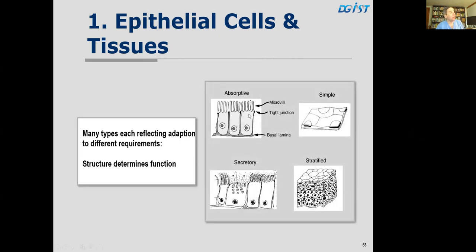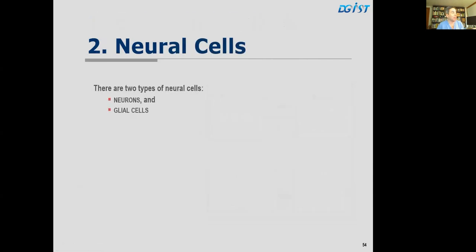The first tissue type is epithelial cells and tissues, with many types each reflecting adaptation to different requirements — structure determines function. Absorptive epithelia have many microvilli for absorption; simple epithelia are very thin for gas exchange or in capillaries; secretory epithelium has many Golgi apparatus for secreting hormones or proteins; and stratified epithelium provides protection, as in the skin.